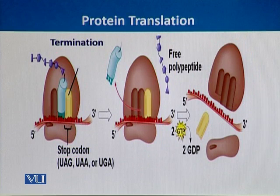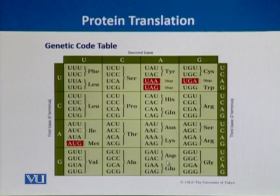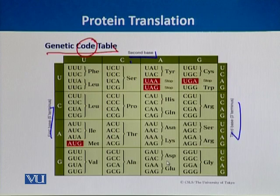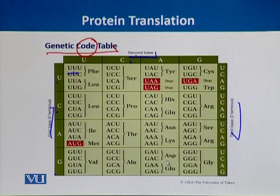We have seen the process of protein synthesis comprising three steps: initiation, elongation, and termination. Now here is a table of the genetic code. As we saw, transfer RNA binds with a specific three-nucleotide sequence called a codon. In this table we can see the first base, second base, and third base. For example, with U as the first base, U as the second base, and U as the third base, three U's combine to code for phenylalanine.